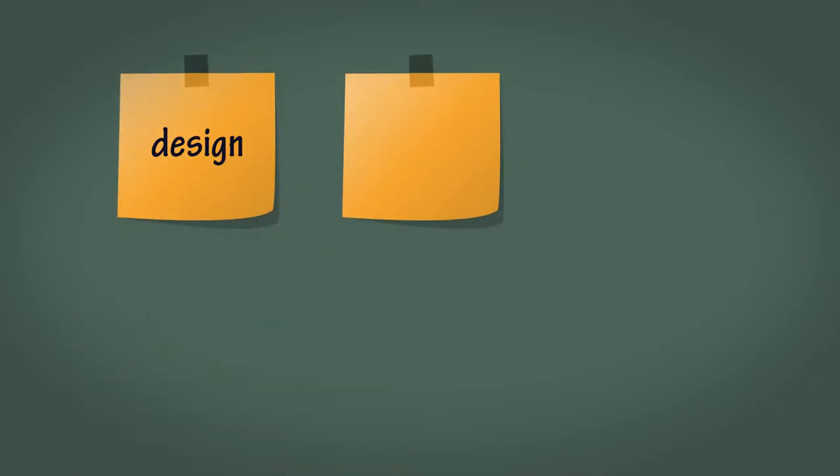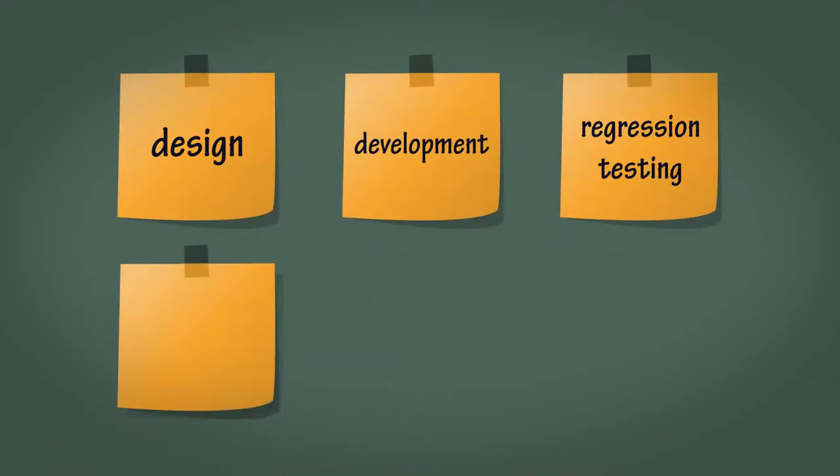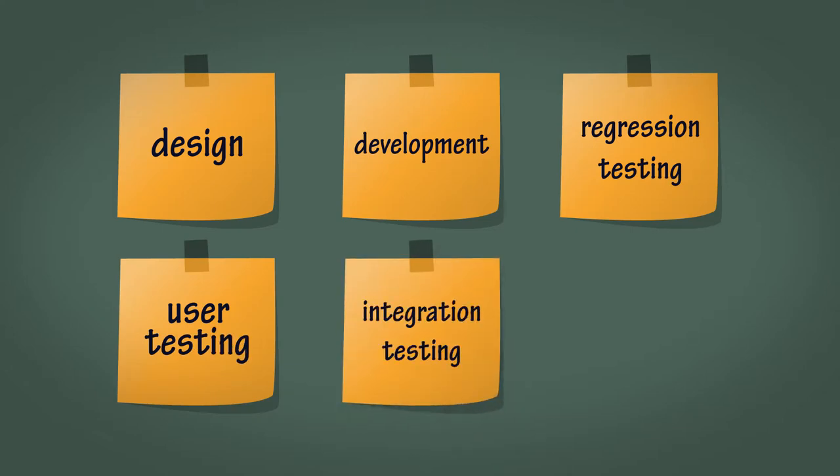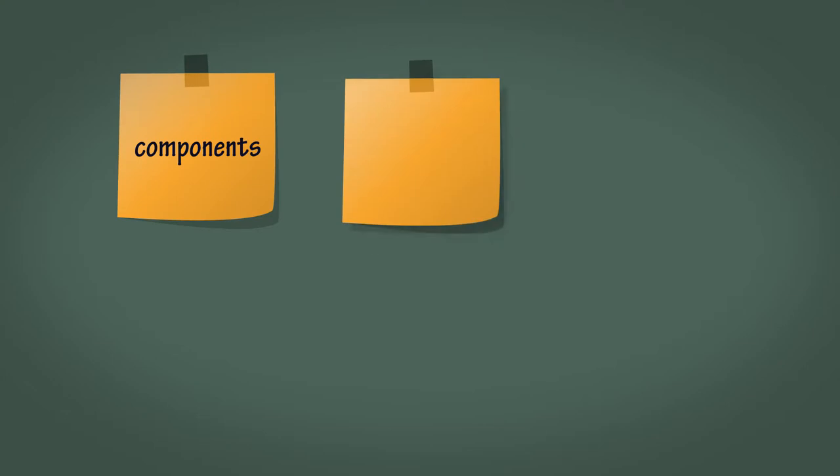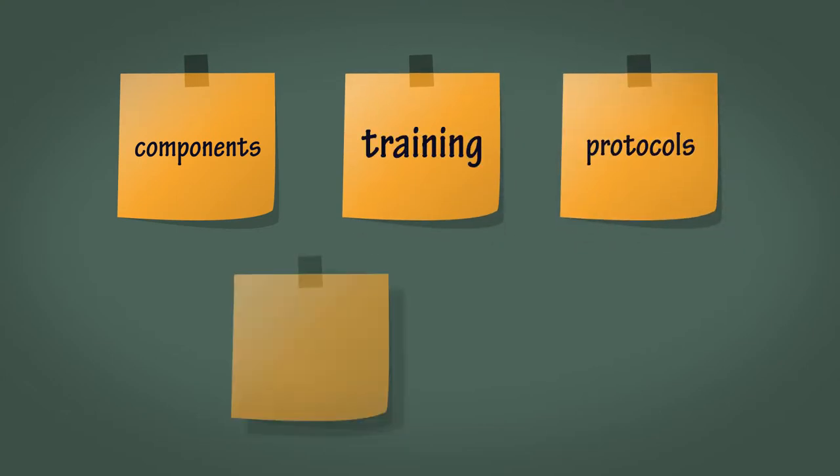Start off by asking the team to capture all of the aspects of the product development lifecycle that they currently incorporate into their definition of done. Ask them to write them on sticky notes and place them on the wall. Acknowledge that this is already no small feat. And explain that in our space metaphor we would probably need extra components, extra training, extra protocols, and enhanced communication in order to dock components to the ISS. What other considerations might we need? Write each of these on sticky notes.